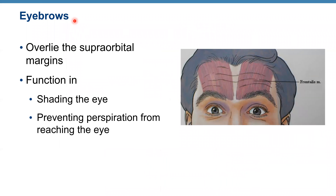Eyebrows overlie the supraorbital margins. Here's a picture of the eyebrows. They function in shading the eye and preventing perspiration — your sweat — from reaching the eye.